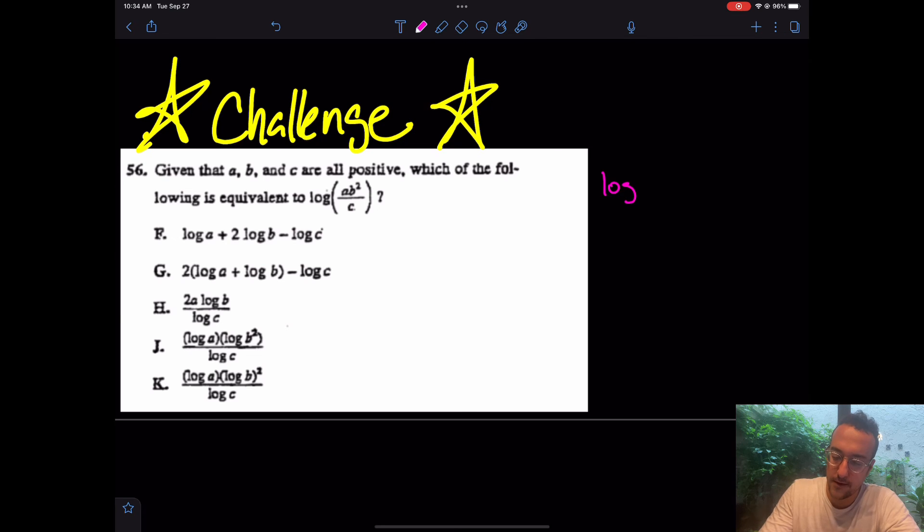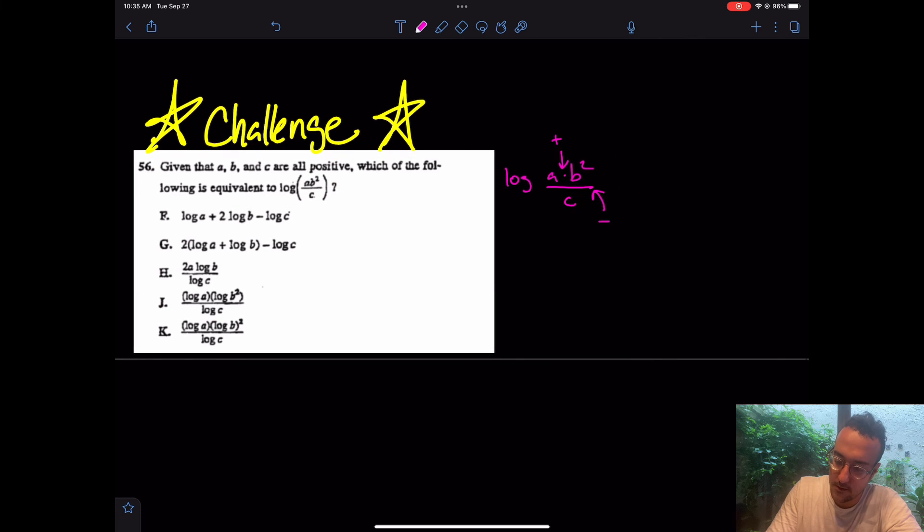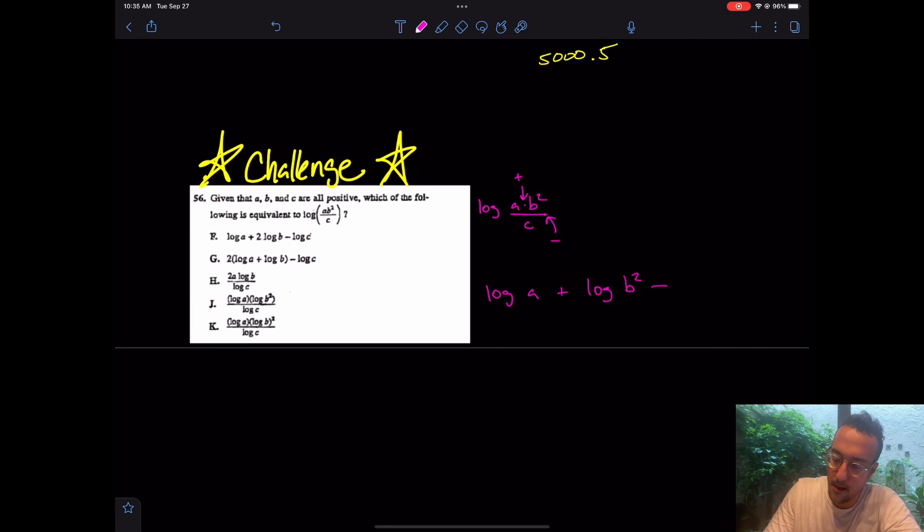So if you want to just watch along, let's get it. Really, what I noticed for this, if I have log of A times B squared all over C, notice I took a second to understand that that was multiplication between those two. Why? Because in that case, I can separate multiplication as addition and division as subtraction. So let's take a look. I'll zoom out a little bit. We have log of A plus log of B squared minus log of C.